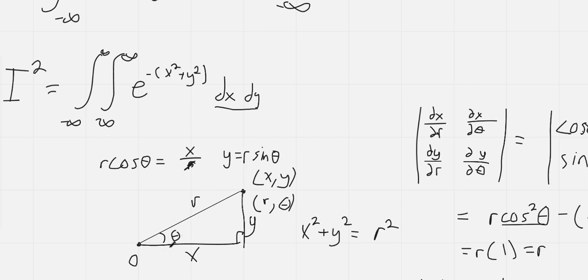Well if theta sweeps all the way from 0 to 2 pi, a full revolution, and r is some positive radius, then for some given theta we will reach all points along this line as r goes from 0 to infinity.